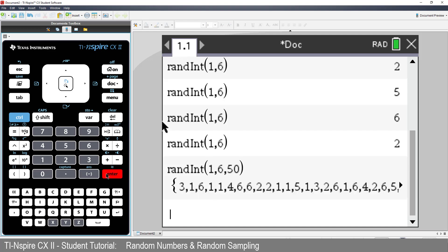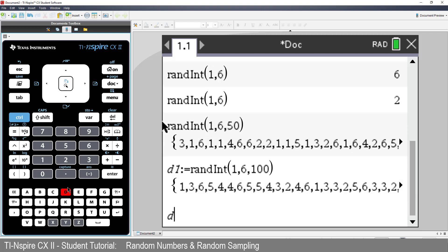In the game of Monopoly, a player moves forward an amount equal to the sum of 2 dice. How far will a player move on average? We can explore this by simulating lots of dice rolls. I'll generate 100 dice rolls and store the result in D1 for Dice 1. Now I'll simulate another 100 rolls and store the result in D2.